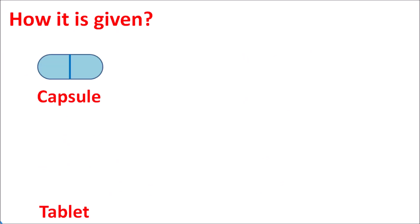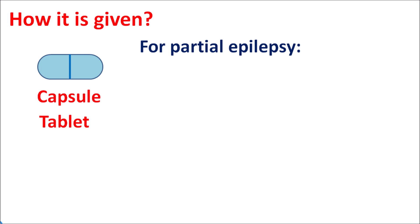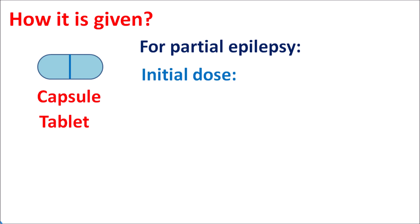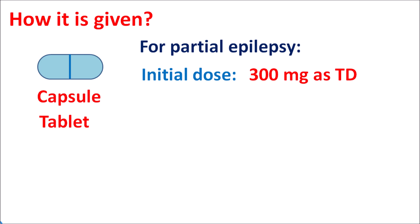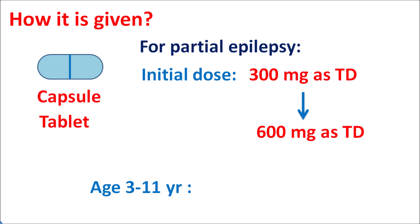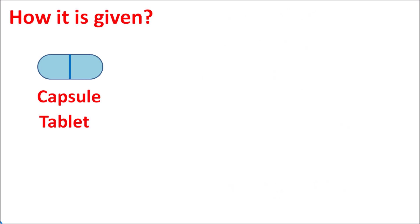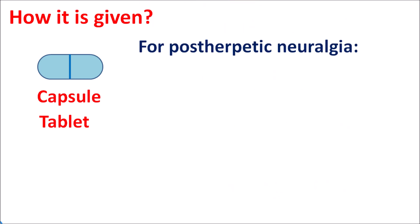Gabapentin is available as capsules and tablets. For the treatment of partial epilepsy, the initial dose is 300 mg given thrice daily, which can be increased up to 600 mg thrice daily — a total daily dose of 1800 mg. In pediatric patients aged 3 to 11 years, the dose is weight-based: 10 to 15 mg per kg per day.